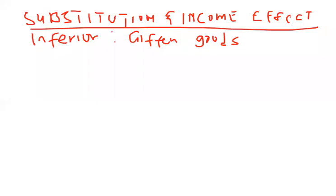Hello everyone. In our previous video we looked at the effect of a change in price — specifically a fall in price — on consumption of a commodity which was a normal good. In this section we are going to look at the effects of a change in price on the commodity, but in this case the commodities are different goods.